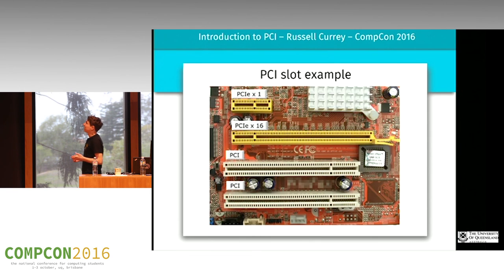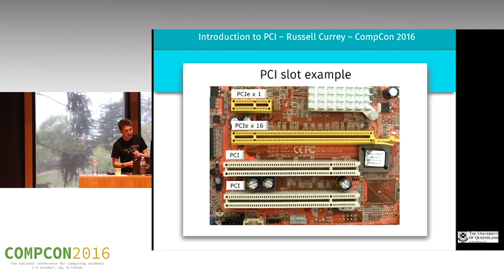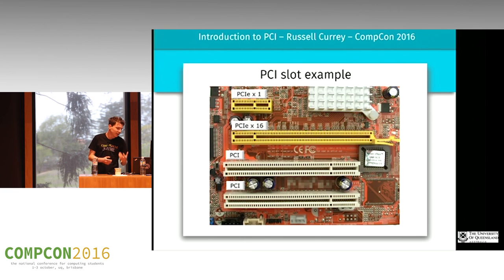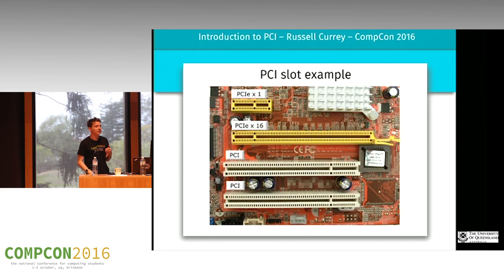Just so we're clear what we're talking about, this is a motherboard — it's got some PCI slots on it. Down the bottom you have two conventional PCI slots, that's old stuff that isn't very good. At the top you have two PCI Express slots. The one at the top has one lane and the one below it has 16 lanes. This variability in speed and power usage is one thing that led PCI Express to be very successful, and we'll talk about that.